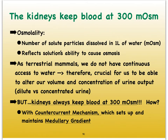How do the kidneys keep our blood at 300 milliosmoles? That's where something called the countercurrent mechanism comes into play. For that we need the loop of Henle in the juxtamedullary nephrons with the vasa recta, but also the collecting ducts. This countercurrent mechanism, especially in the loop of Henle together with the vasa recta, creates a gradient in the medulla — referred to as the medullary gradient or the interstitial medullary gradient.